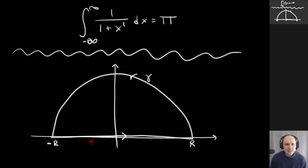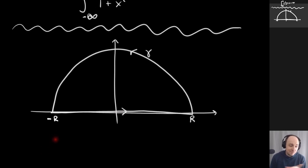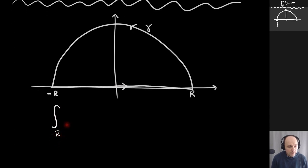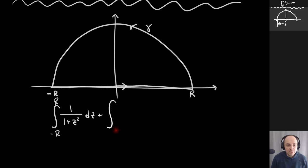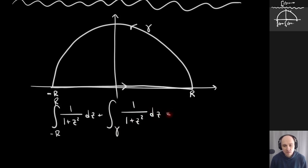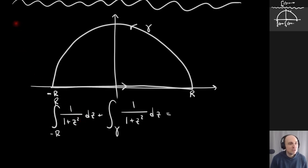Now I can set this up. I've broken the contour into two pieces: the integral from −R to R of 1/(1+z²) dz, plus the integral over the semicircular piece Γ of 1/(1+z²) dz.